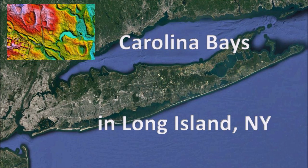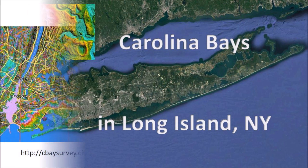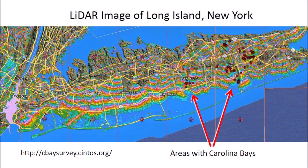Long Island was created by accumulations of rock debris, called moraines, deposited by advancing glaciers during the Ice Age. Since the Carolina Bays are found on top of these moraines, we can estimate the maximum age of the bays. A LiDAR image of Long Island, New York shows several areas with Carolina Bays identified by Michael Davies.